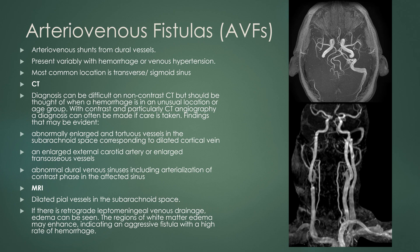Next we have arteriovenous fistulas, or AVFs. These are arteriovenous shunts from dural vessels. They can present variably with hemorrhage or venous hypertension, and are most commonly located at the transverse/sigmoid sinuses. Diagnosis on CT can be difficult, especially on non-contrast CT, but should be considered when hemorrhage is in an unusual location. In an older population, hemorrhage along the tentorium cerebelli may suggest a tentorial dural AV fistula. With contrast you can make the diagnosis. In this case, a dural AV fistula was diagnosed on a non-contrast MRA of the head, showing the connection between the artery and the dural venous sinus.